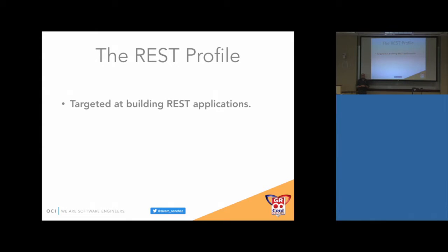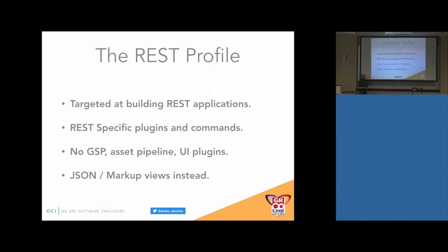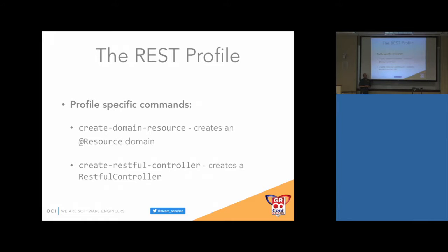The REST profile gives you an application with no GSP at all. It has REST-specific plugins and commands. There's no asset pipeline, no UI plugins. However, there are views in the REST profile — the JSON views — which I'll explain in a moment. The REST profile also brings profile-specific commands like create-domain-resource, which is like create-domain-class but the generated domain class contains the @Resource annotation.